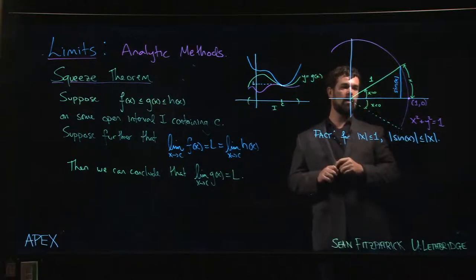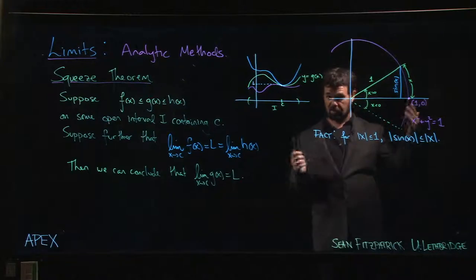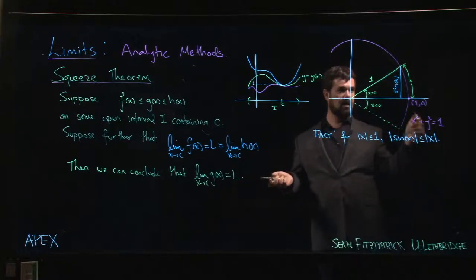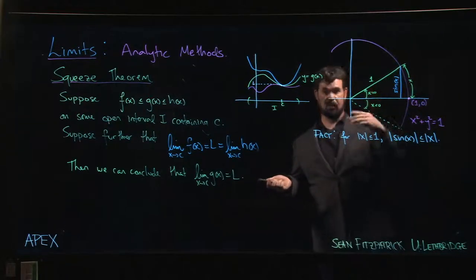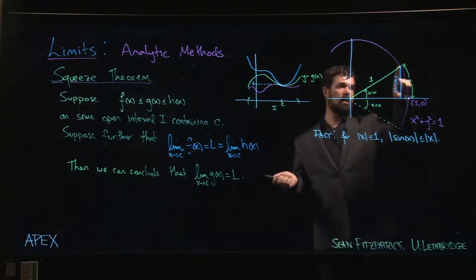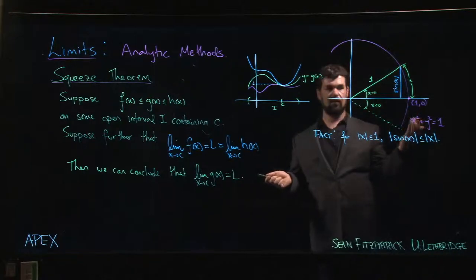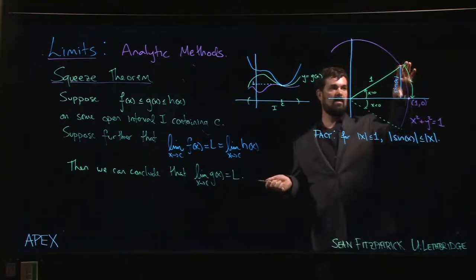Now, one of the things we know is that the arc length, this arc of the circle that's spanned by this angle x, is equal to x. That's the whole point of radian measure is that this length is equal to the angle. We also know that this height here, the y value, is sine x. That's how sine is defined. Sine is defined as the height of this triangle that you get from that angle.